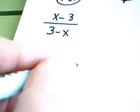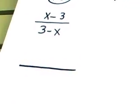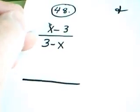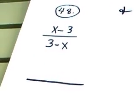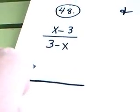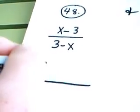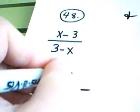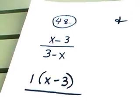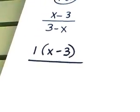Now, if I factor the numerator, x minus 3 factors really not in any fancy way. The only way it truly factors is to pull out a 1. So the truth is it doesn't look a lot different than it started.